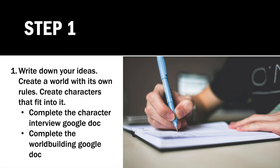Think about something like Encanto — it's a real-world setting but with some magical elements, where the family has magical abilities that normal people don't have. You also need to create characters that fit into that world. On the Google Classroom I'm going to attach a character interview in the form of a Google Doc as well as a world building Google Doc. I want you to complete both of these and submit them for my review. This is step one of the process — to help you get an idea of where the story in your head takes place and who the characters are.